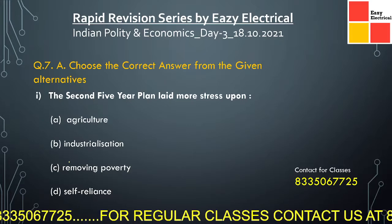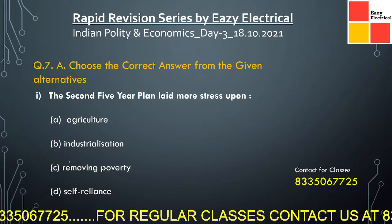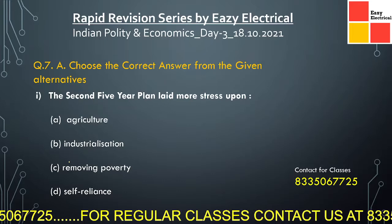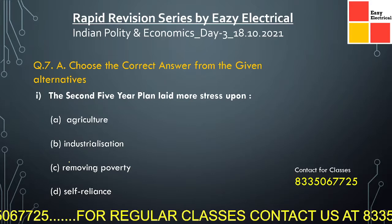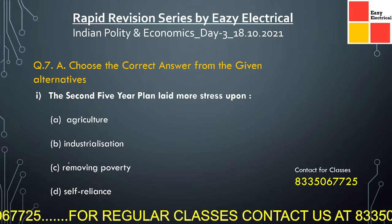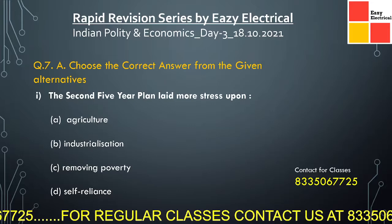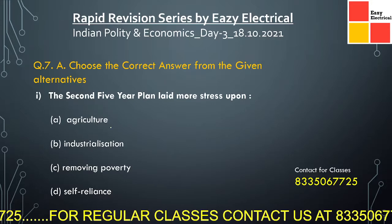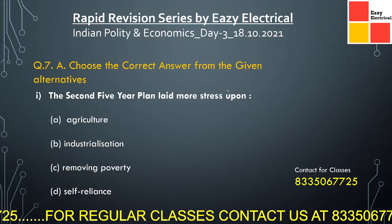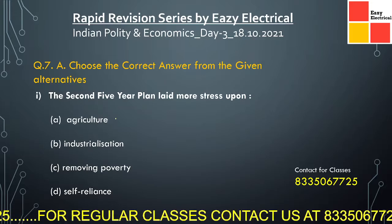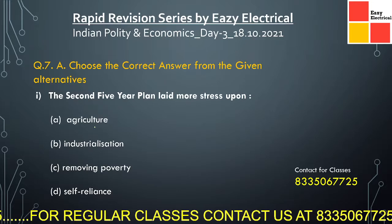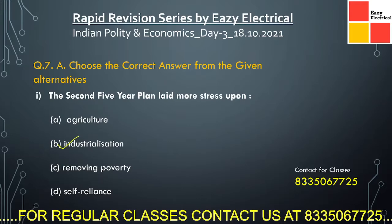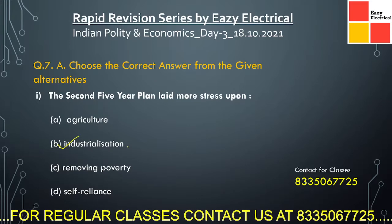The second Five Year Plan laid more stress upon which of the following: agriculture, industrialization, renewing property, self-reliance? The first Five Year Plan laid more stress upon agriculture, and the second Five Year Plan laid more stress upon industrialization. So the answer is industrialization.